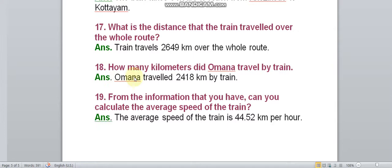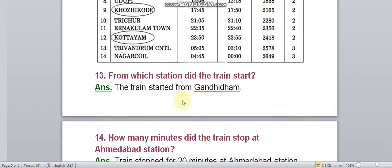How many kilometres did Omana travel by train? Answer: Omana travelled 2418 km by train. The total distance was 2649 km at the last station. At the Kottayam station the distance was 2418.